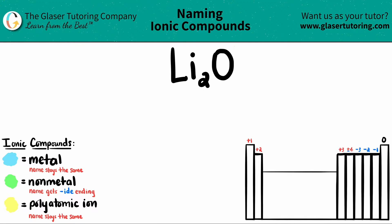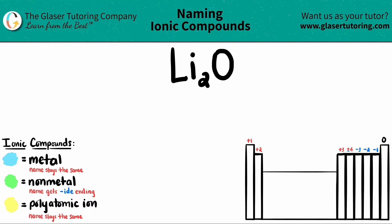Today we are going to be naming the ionic compound Li₂O. The first thing we have to know is that Li, which is lithium, is a metal because it's over here on the periodic table. And the O, which is oxygen, is a non-metal — it's over here on the periodic table.